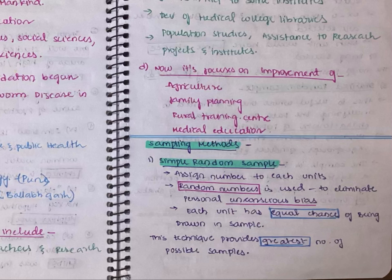Coming to the first one, we'll assign numbers to each unit. Random numbers are used to eliminate personal unconscious bias, and each unit has equal chances of being drawn into a sample. For example, if Marrow or Prepladder is promoting at your college and asking you to participate in a lottery, if you win you'll get free subscription. Your class of 150 students will participate.